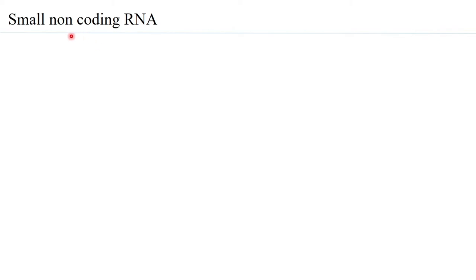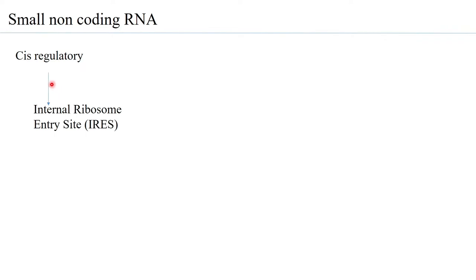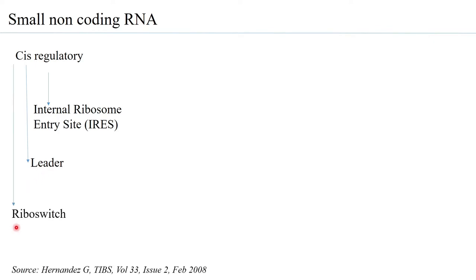Within the small non-coding RNA is what is called cis-regulatory RNA sequences. These cis-regulatory RNA sequences are of three main groups: the IRES regulatory sequence (internal ribosome entry site), the leader RNA which gives rise to leader peptides, and riboswitches. All three fall under this group of small non-coding RNA.